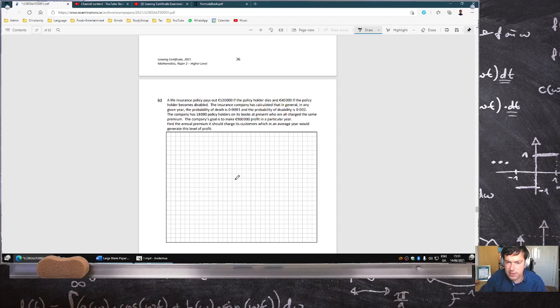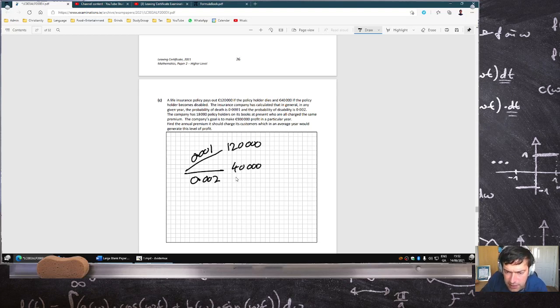Life insurance, 120,000 if policyholder dies and 40,000 if they become disabled. The probability of death is 0.001 and disability is 0.002. Pays out 120,000 on death, 40,000 on disability. You have to be careful, three zeros here and two zeros here. The company wants to make 900,000 profit. Finding the premium you should charge.